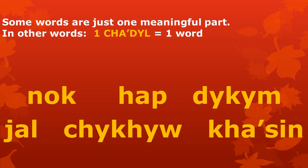Some words are just one meaningful part by themselves — in other words, one tzadl is one word. For example, the words: nokk, hap, dkkm, jal, tkow, and katsin.